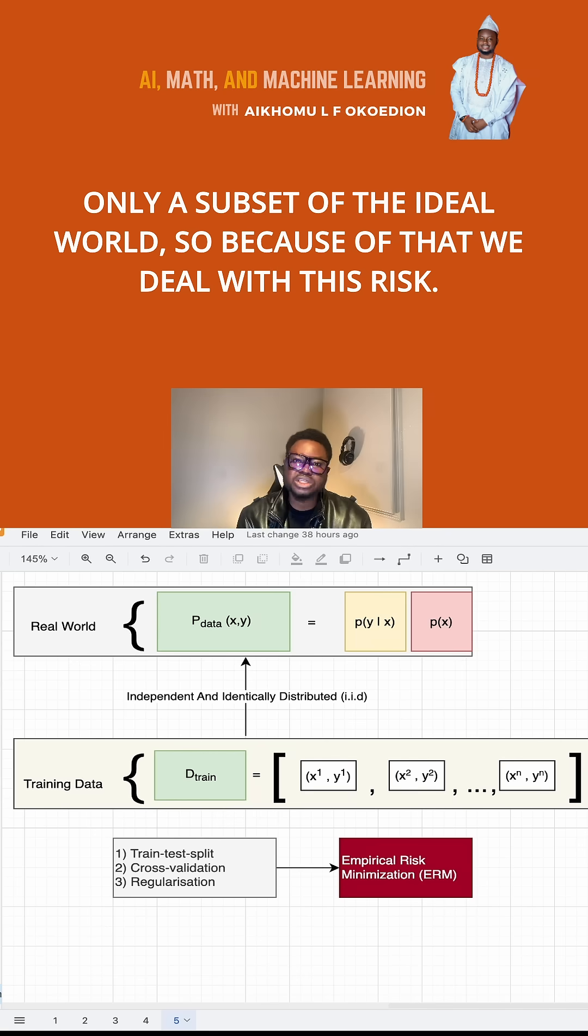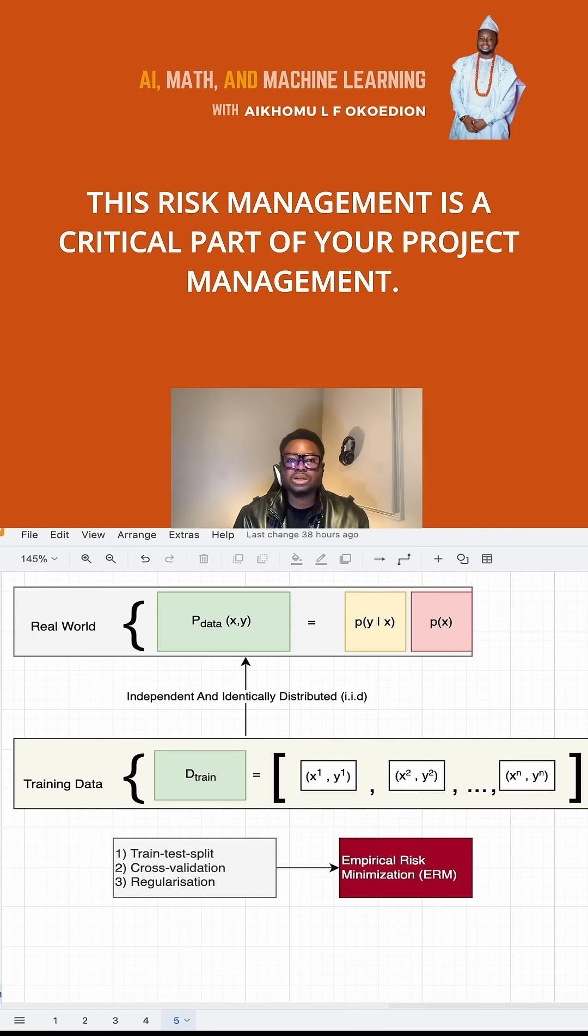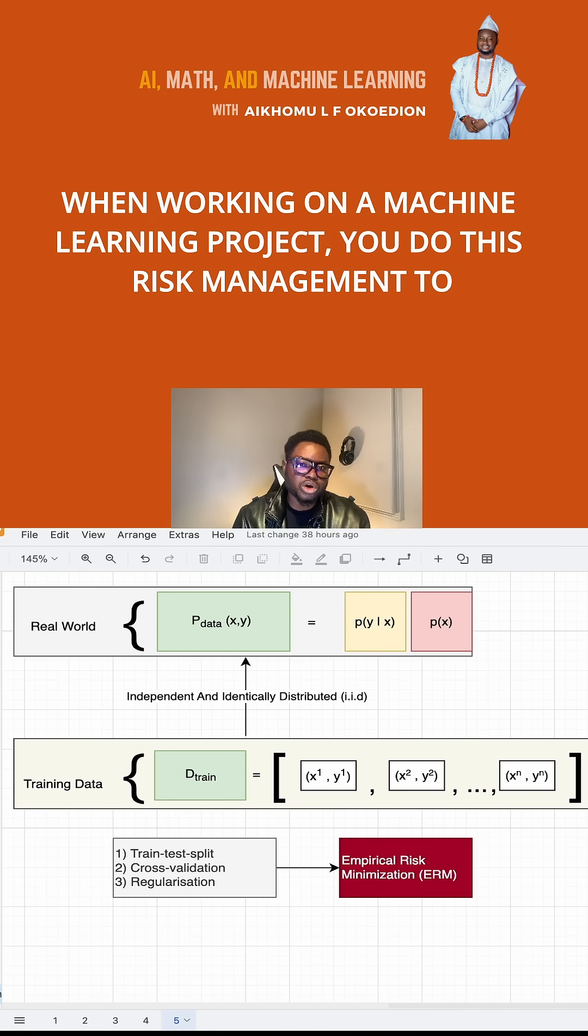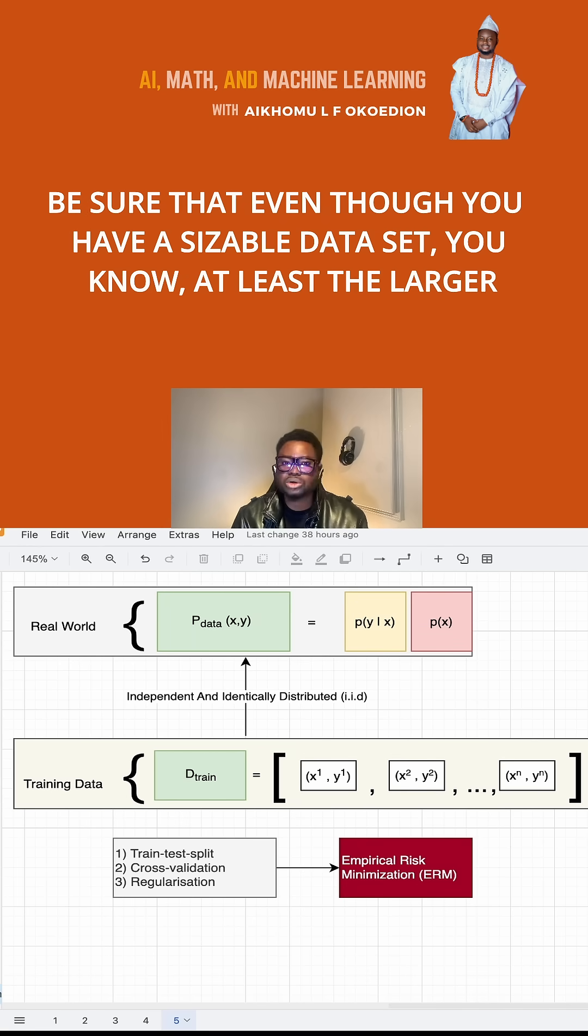Our data is not only science. Because of that, we deal with this risk. It's a critical part of your project management. When working on a machine learning project, you do this risk management to be sure that you're addressing these issues.